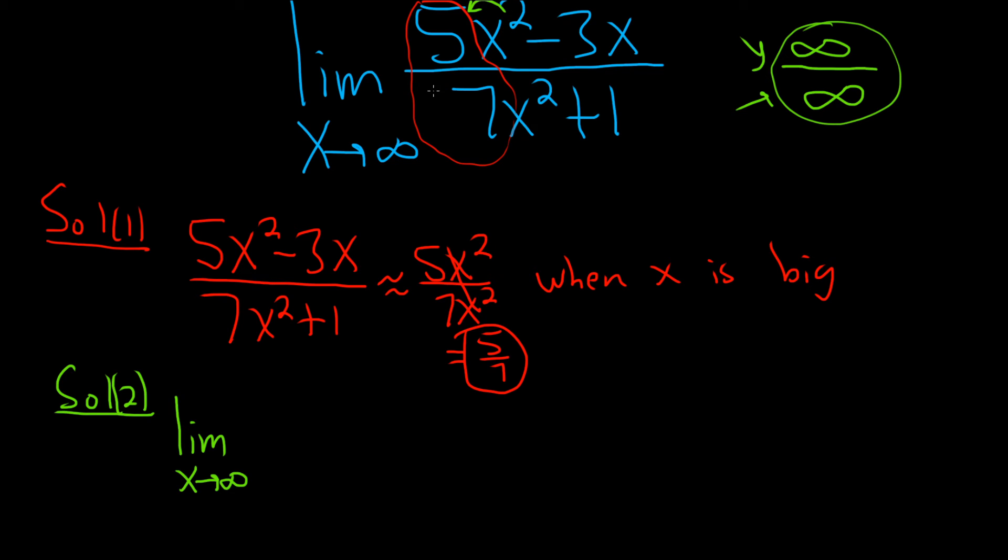So using the power rule, you have 2 times 5, so that's 10x minus—and then the derivative of 3x is 3. Then you do the same thing on the bottom. 2 times 7 is 14x, and the derivative of 1 is 0.